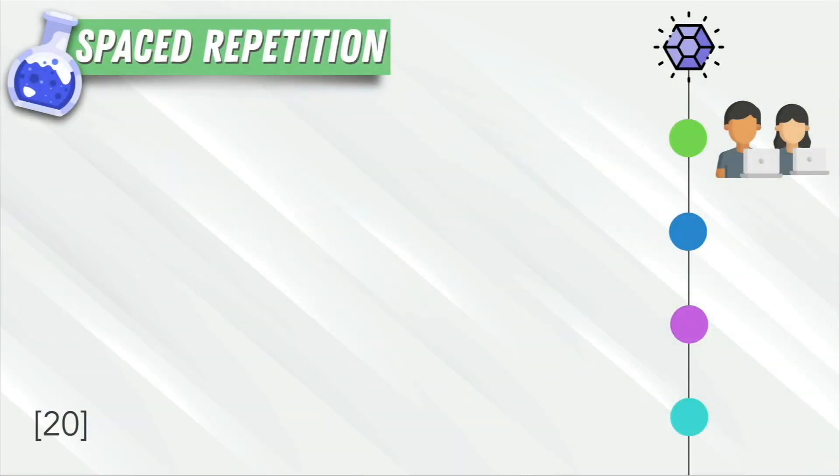That's why we want to avoid cramming, which doesn't build solid neural structures. The idea is to put just as much time as you would have cramming, but instead spacing it over a long period of time.